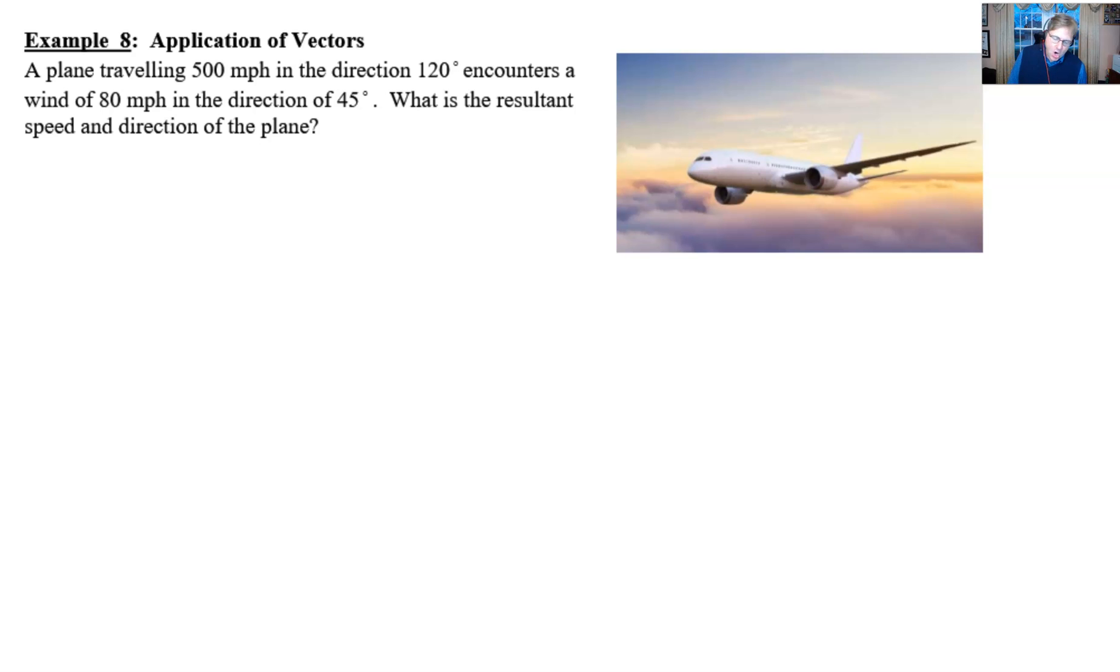Here we are, all buckled in, ready for our flight. Let's see what the problem says. Got a plane that's traveling 500 miles per hour, very typical for a cruising jet airliner, in the direction of 120 degrees. It encounters a wind of 80 miles per hour in the direction of 45 degrees. What is the resultant speed and direction of the plane? Pretty typical vector question here.